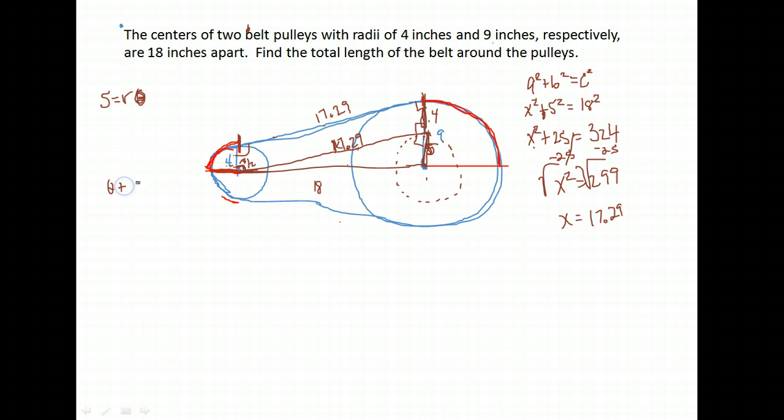Whatever θ is, plus that π/2 angle, plus I'm going to call this here angle A. Angle A, which is very small but it's still there, together those would be 180, not because they're in a triangle, but because they form a straight line together.